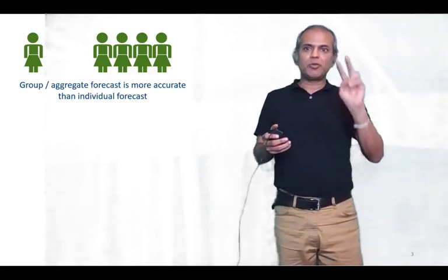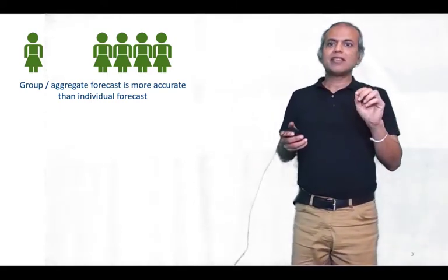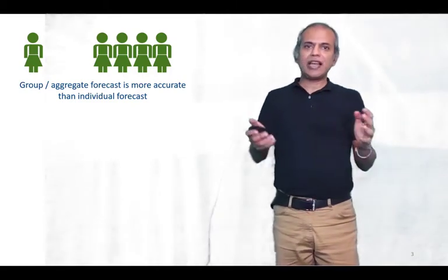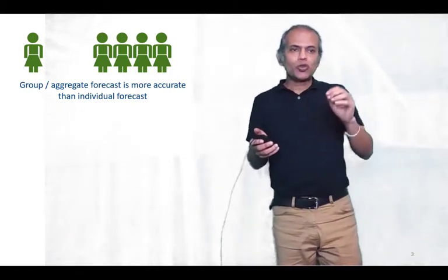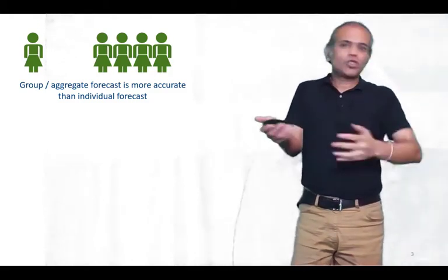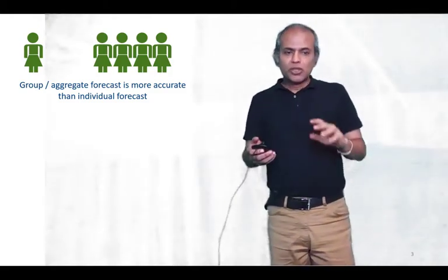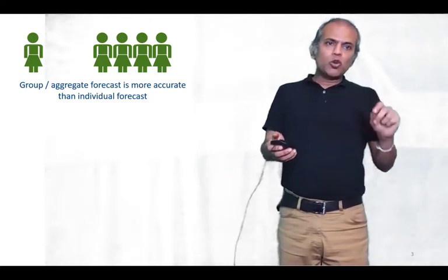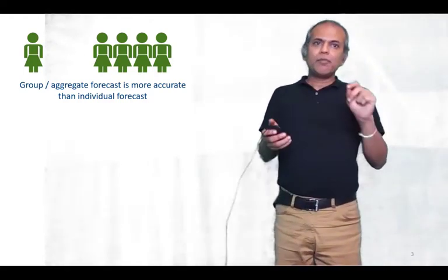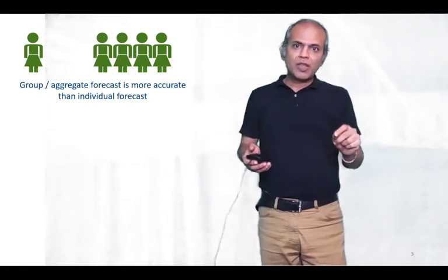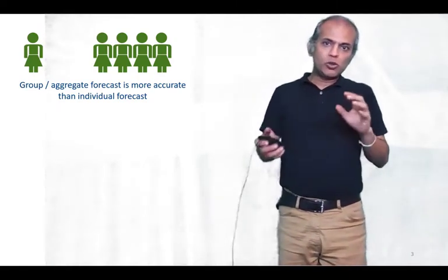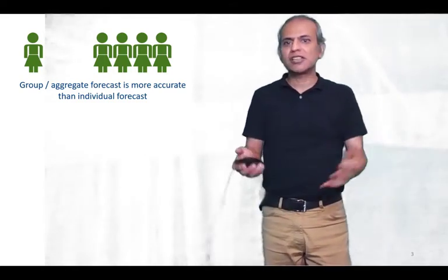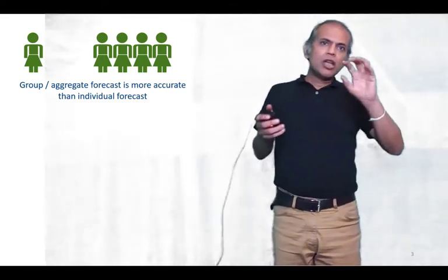We need to understand two key principles. Number one: group or aggregate forecasts are always more accurate than individual forecasts. For example, in a football match, it's very difficult to predict how many goals each individual player will score, but if we know the two teams playing, it's easier to predict the total goals a team would score.